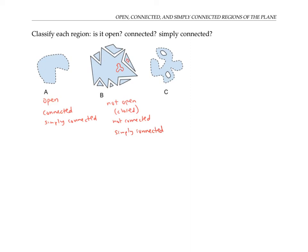The last region C is not open, because it contains some of its boundary points, but it doesn't contain all of them, so it's not closed either. It is connected. But it's not simply connected, because it has two holes in it. And if I draw a simple closed curve around one of those holes, it'll enclose points that are shaded white and not just points that are shaded light blue.